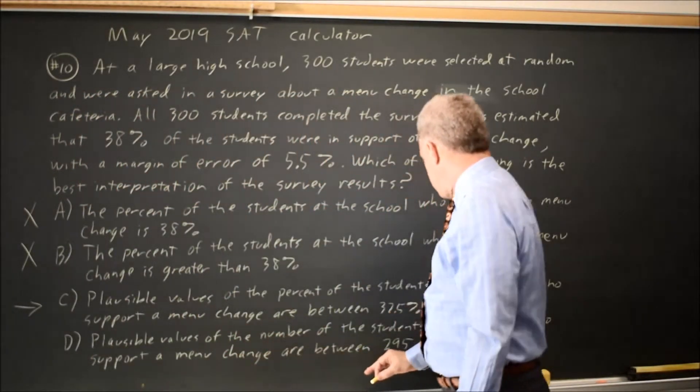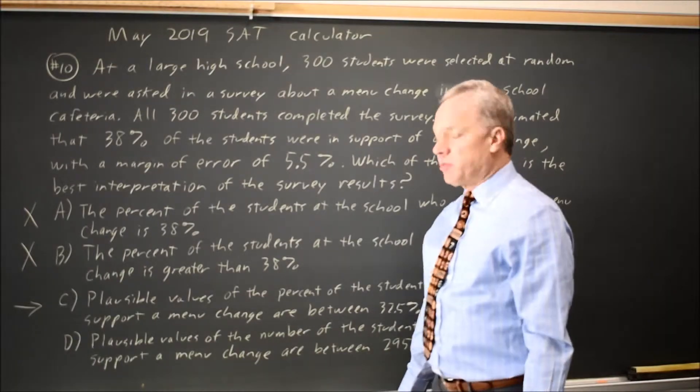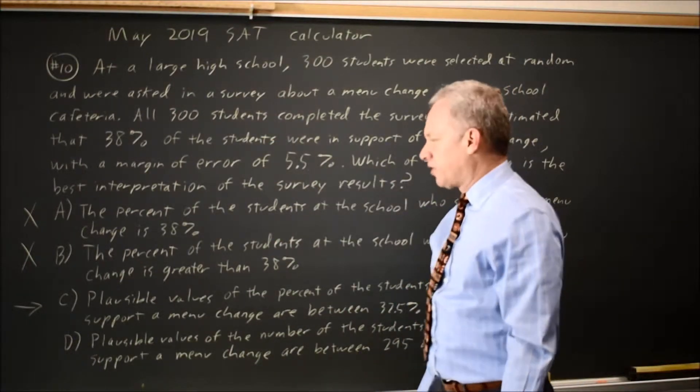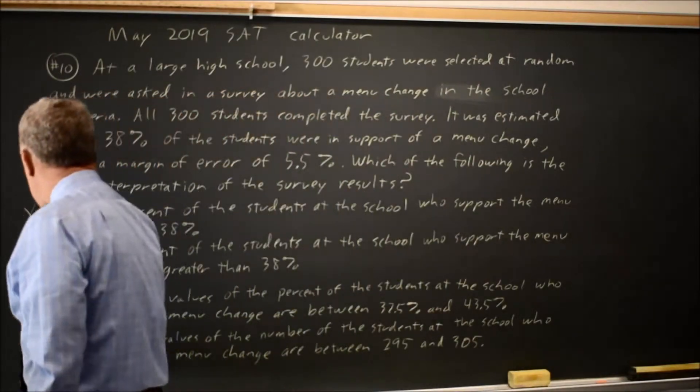Choice D is about the number of students who support the menu change being the number in the survey plus or minus 5, and that does not make sense.